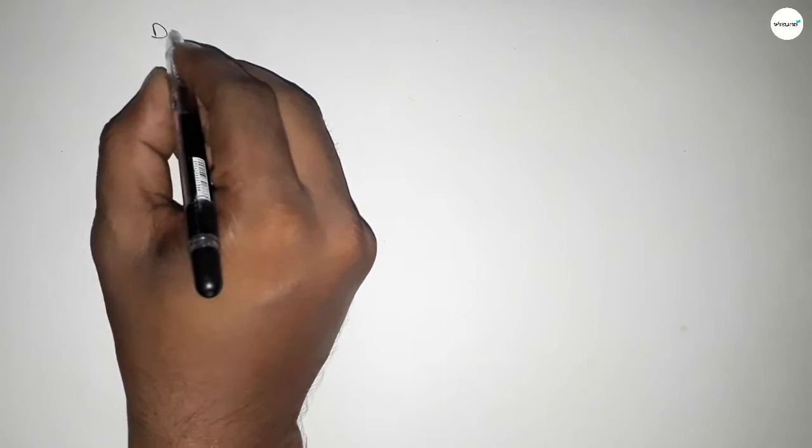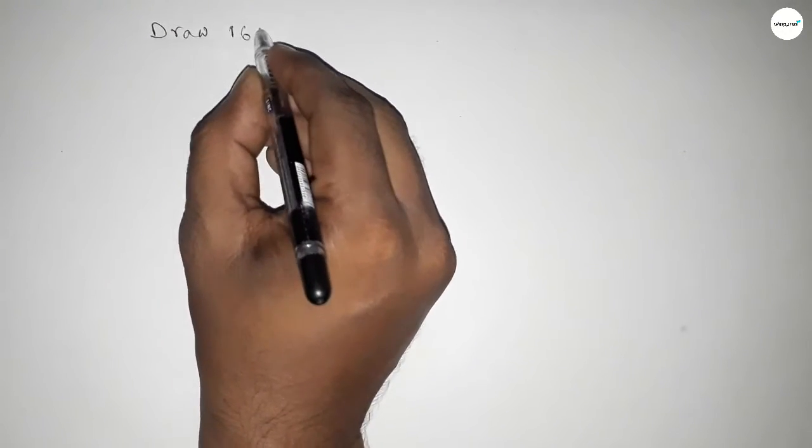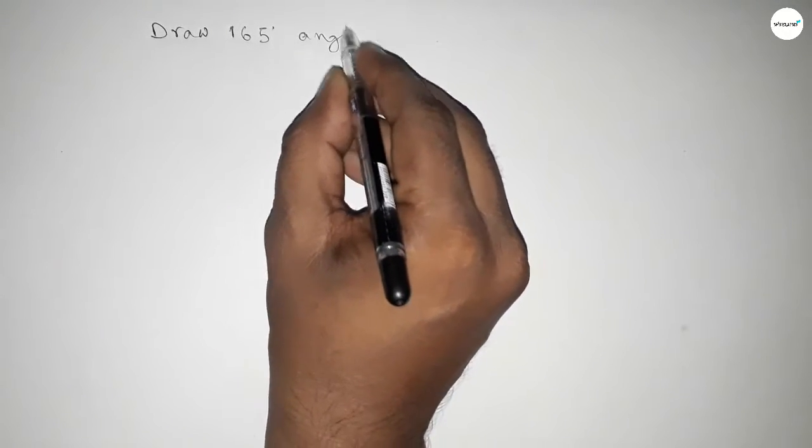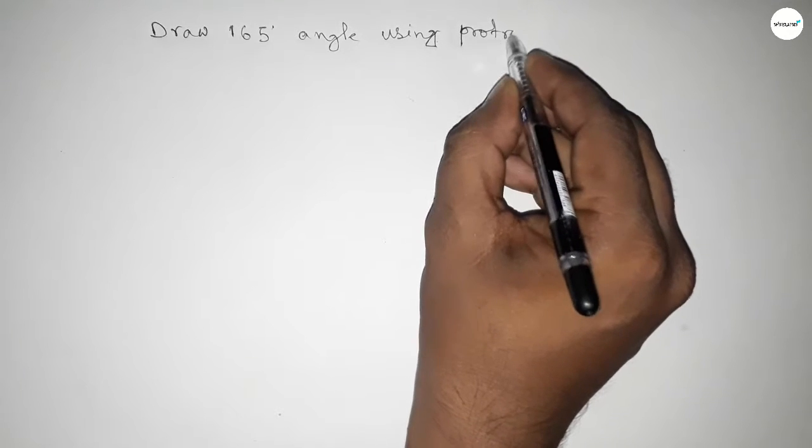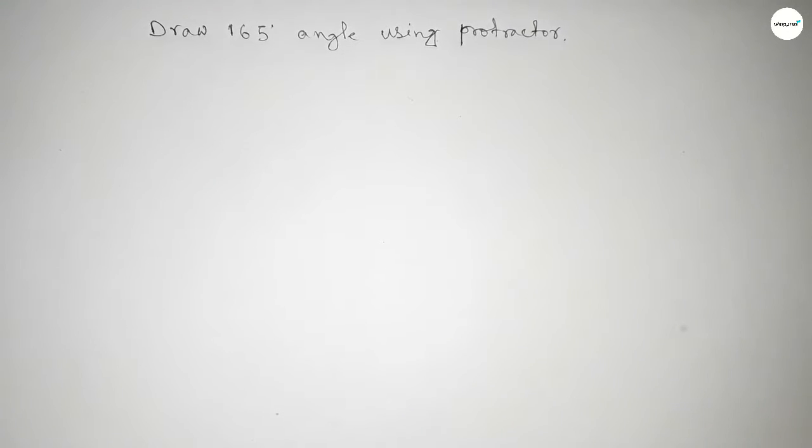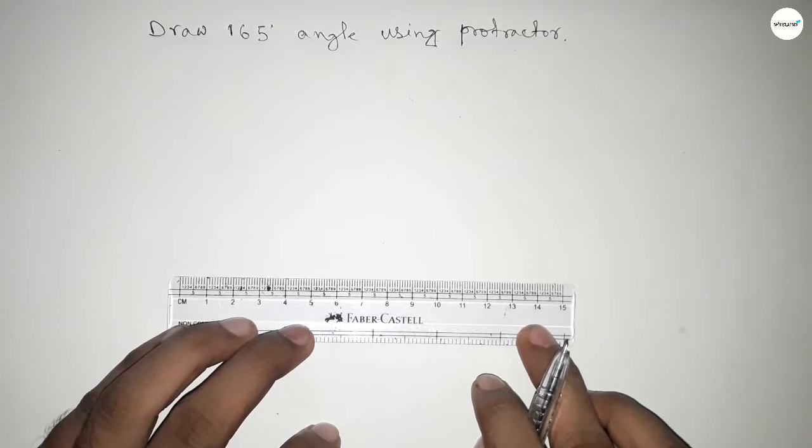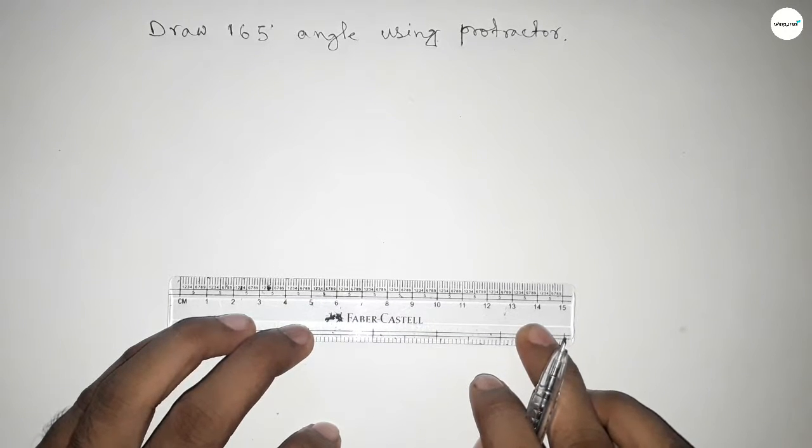Hi everyone, welcome to SSR Classes. Today in this video, we have to draw a 165-degree angle using a protractor. Let's start the video. First of all, we have to draw a line of any length.